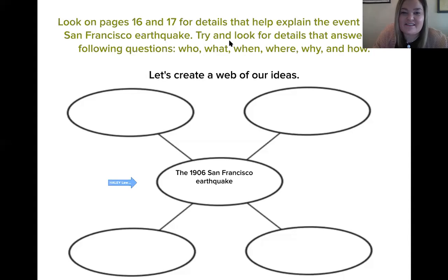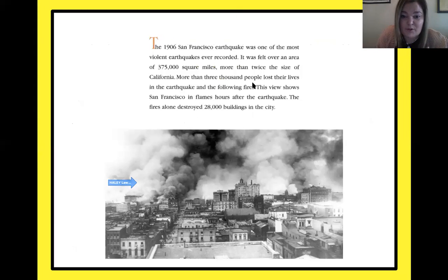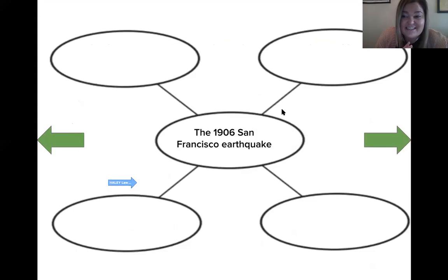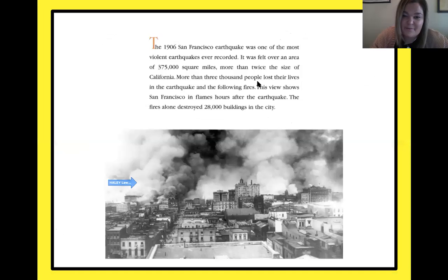Hopefully you have your web drawn. Now we're going to go back and look for those details in the text. 'The 1906 San Francisco earthquake was one of the most violent earthquakes ever recorded.' Do we think that's important? Yeah — that's pretty important, because it's telling us this is one of the most deadly and destructive earthquakes in history. So the first thing I'm going to put in my web is: this is one of the most violent earthquakes ever recorded. Pause that video and get that written down on your web.